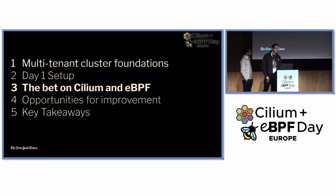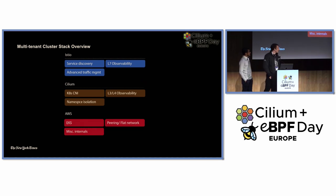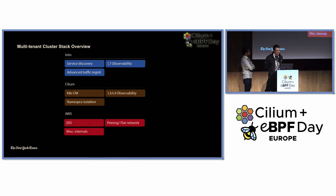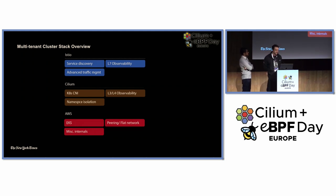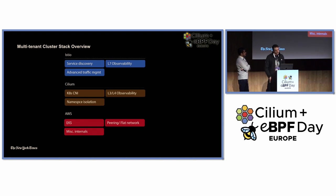I'm going to pick up where Ahmed left off and talk about our current configuration and how we're leaning into Cilium and eBPF. This is a more holistic view of our network stack. Our friends at Istio, Cilium, and AWS are continuously improving and adding new features to their offerings. However, that also means there's more overlap between the features they offer. As platform engineers, it's important for us to map capabilities we're going to build on to the vendor — otherwise we're just making things more complex, not simpler. For Istio, we use service discovery, L7 observability, and advanced traffic management — for things like routing a request based on headers. For Cilium, we use it for CNI, L3 and L4 observability, and namespace isolation. For AWS, we use it for the EKS offering and the various VPC offerings. This makes migrations easier and the stack more maintainable overall.